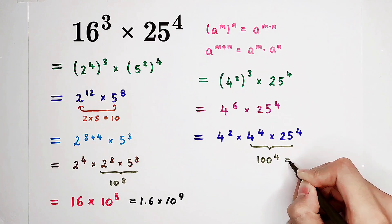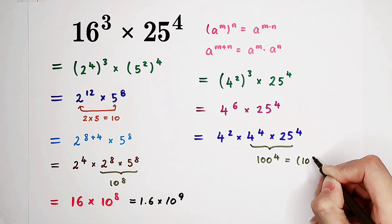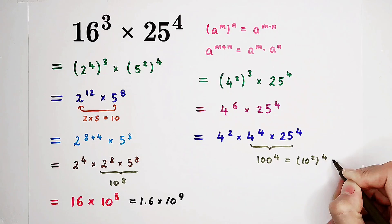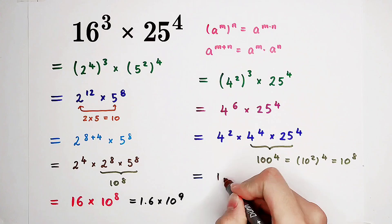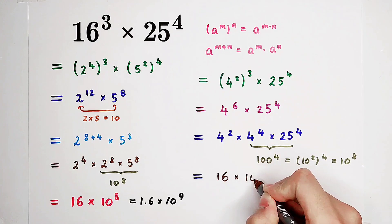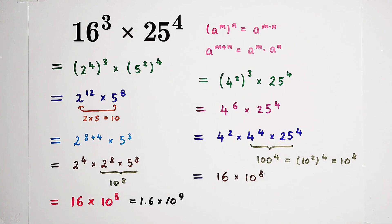And 100 to the power of 4 is 10 squared to the power of 4. And that is 10 to the power of 8. And this is 4 squared is 16, then times 10 to the power of 8. And it is equal to this.